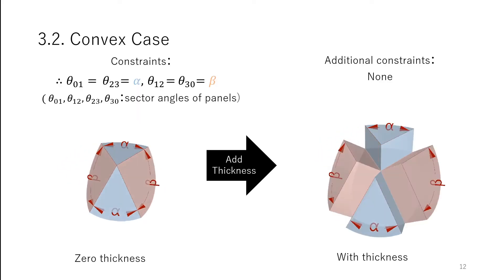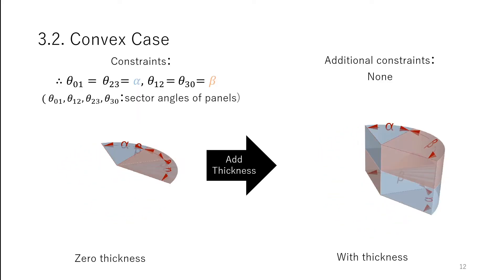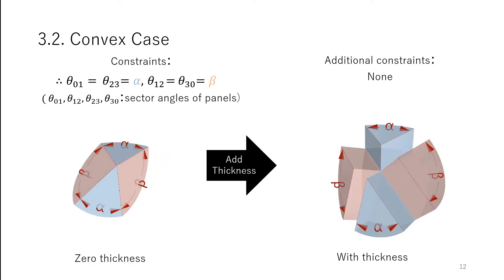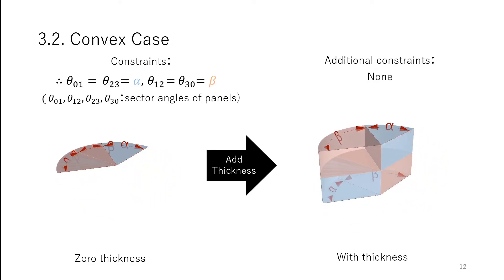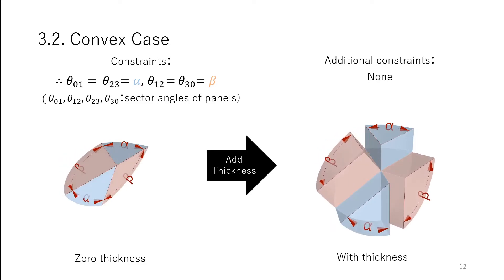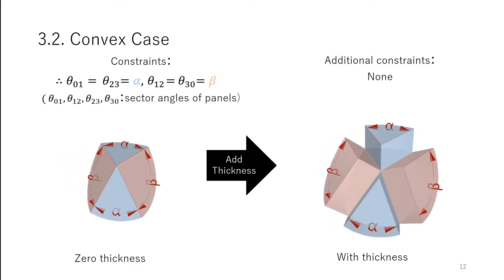When adding thickness to convex vertices, we can add the thickness on the convex side of the vertex to ensure that all fold lines still intersect at one point.